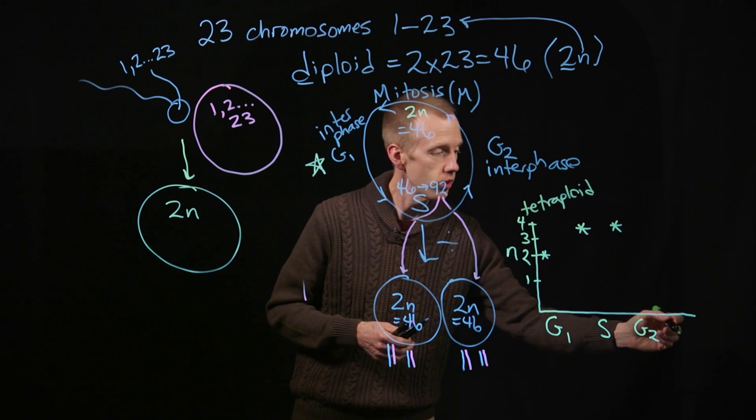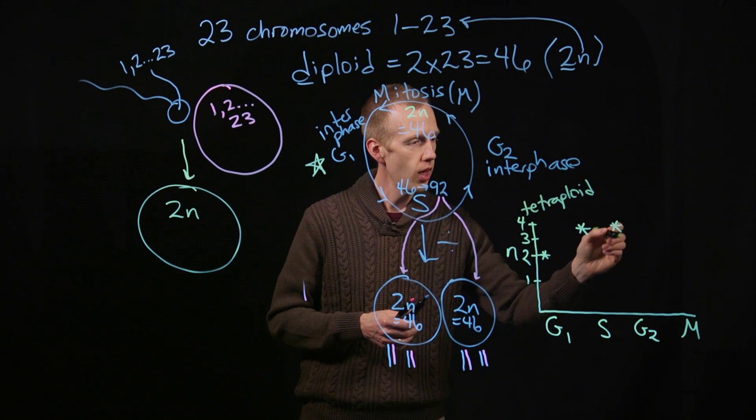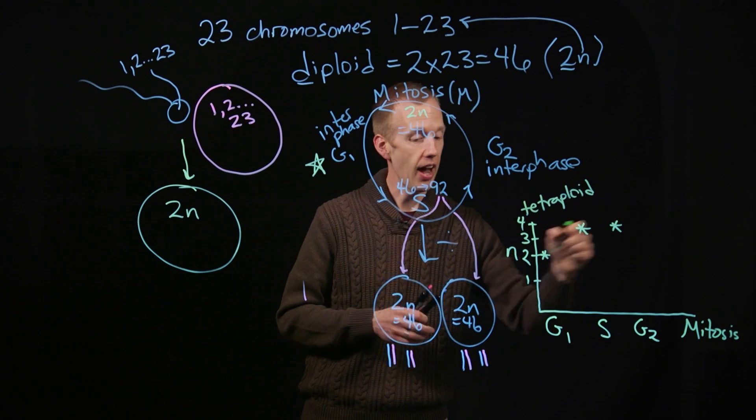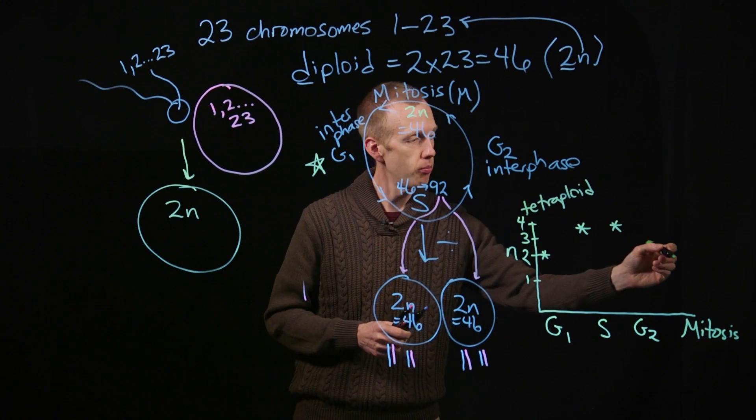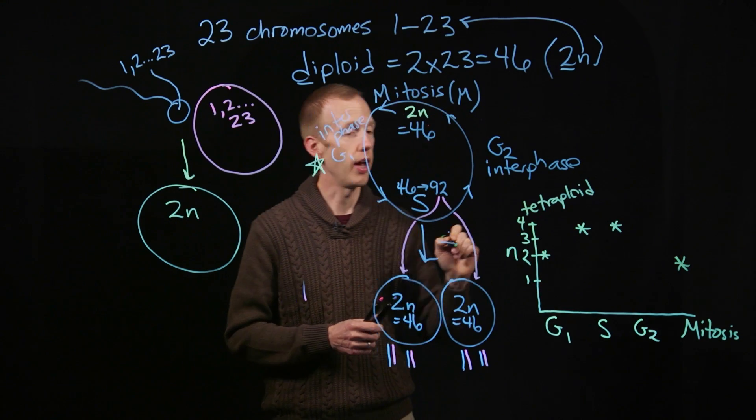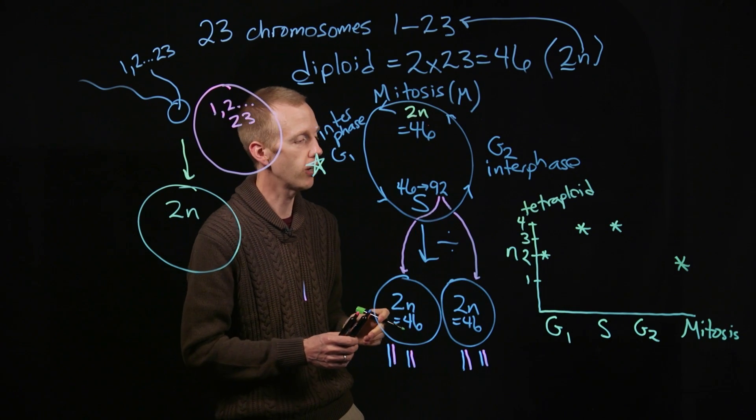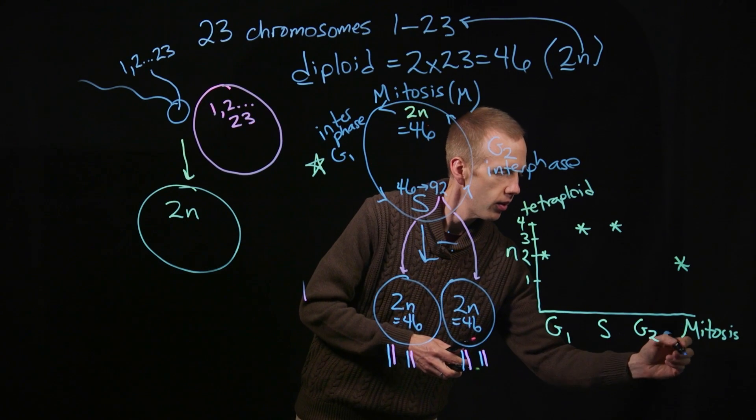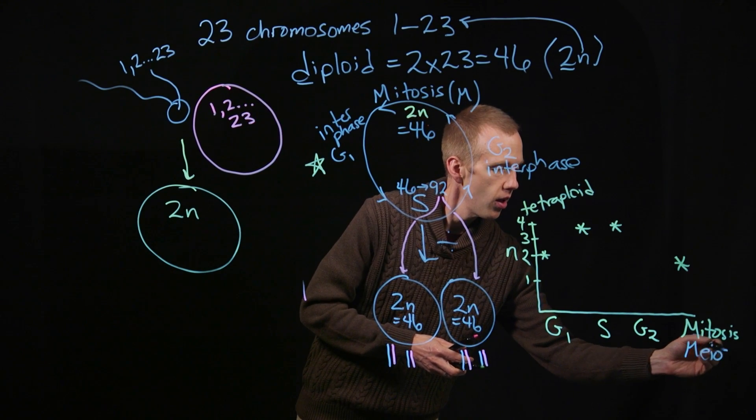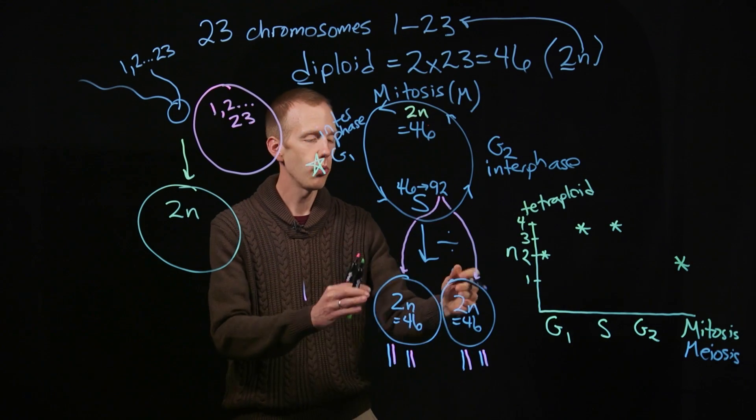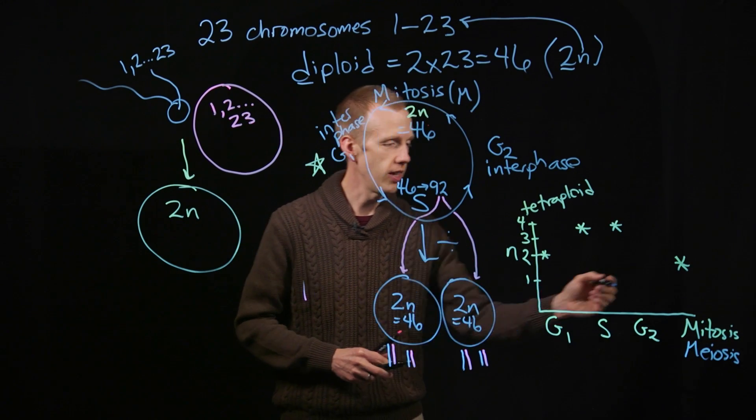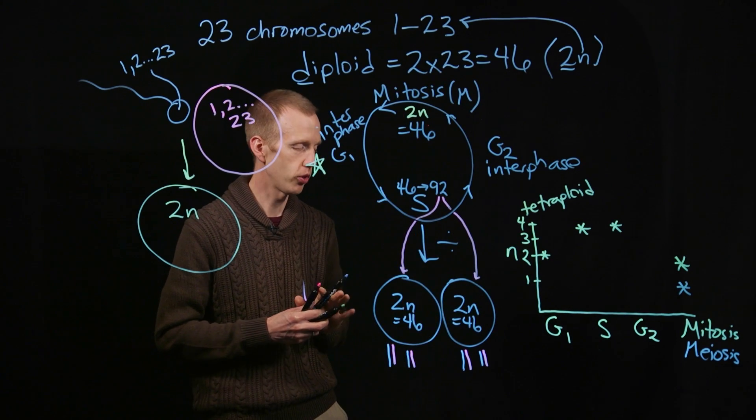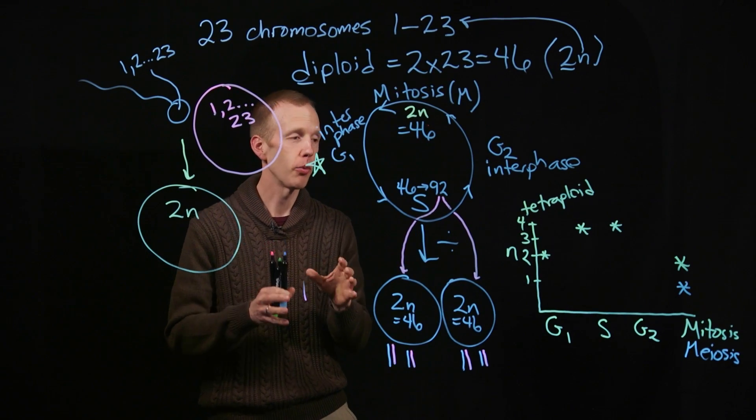Then during mitosis, that number is halved, through the process of cell division, back to 2n. Two copies of every chromosome. If this was meiosis, then there would be two rounds of cell division, resulting in every resulting daughter cell having one copy of every chromosome. So in a nutshell, to summarize,